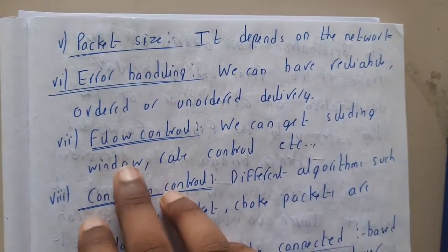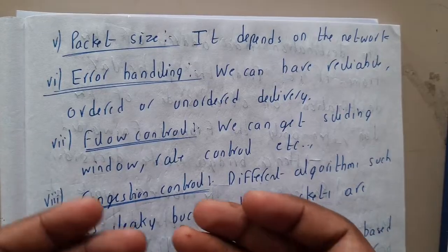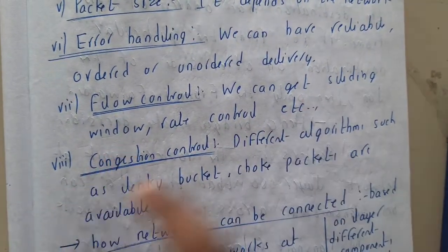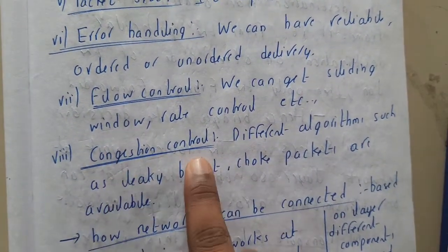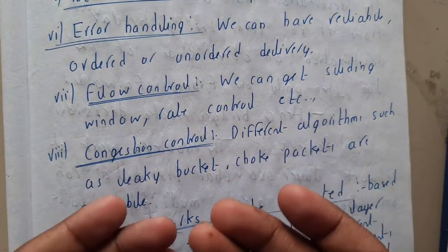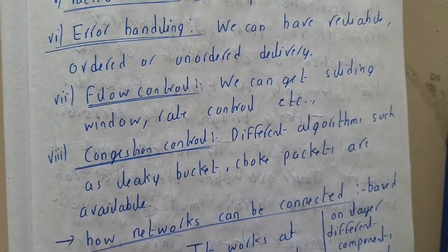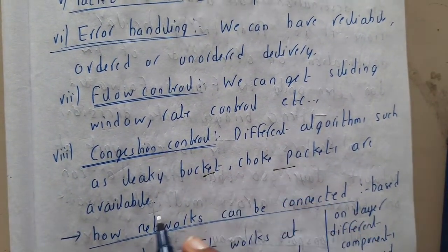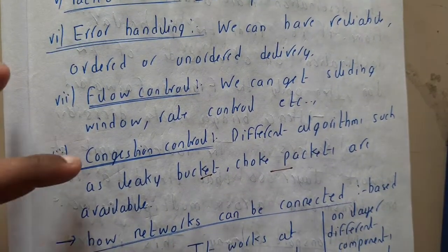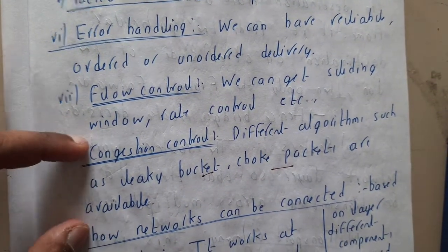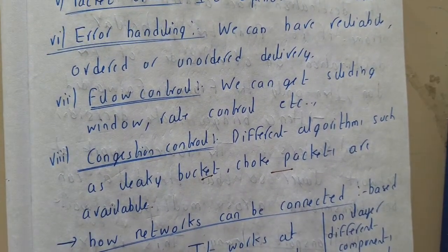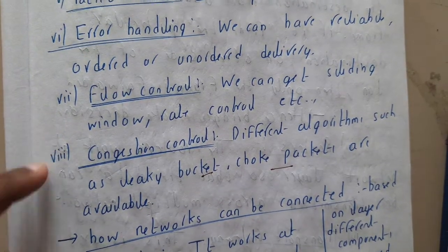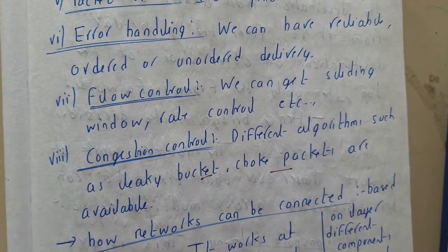Flow control differs too — how much speed to send, the rate of control, and window size. Congestion control also varies: whether they follow leaky bucket or token bucket. We did discuss congestion control in our previous unit, so if you haven't watched that, please do so for a clearer idea.